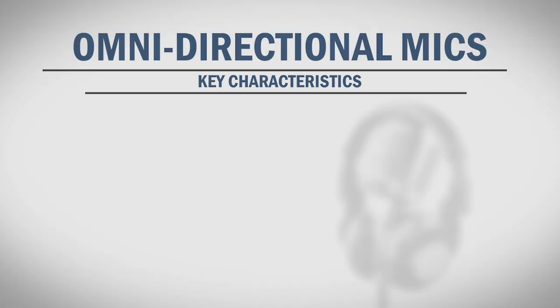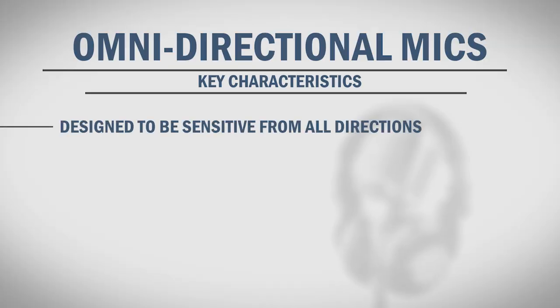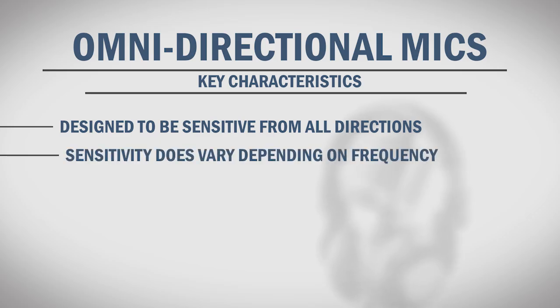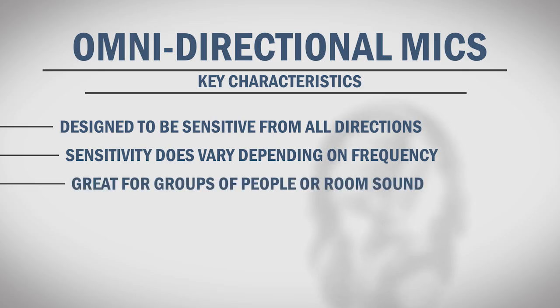There are two broad categories that most mics fall into: omnidirectional and directional. Omnidirectional mics are designed to be equally sensitive to sound regardless of which direction sound comes from, though in reality they don't pick up all frequencies equally from all directions. Omnidirectional mics are great for picking up groups of people or an overall room sound, but can't be aimed for selective sound pickup.